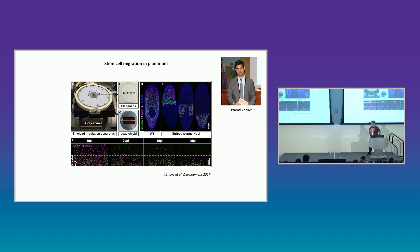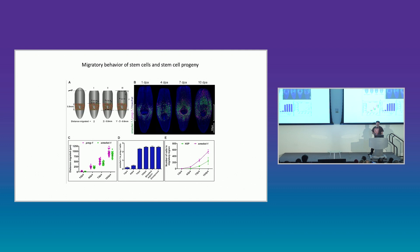So that was Sounak's project, and Prasad's project was slightly different. He was interested in stem cell migration, and he did this by essentially inventing an assay that allows you to leave behind a stripe of stem cells in the animal using collimated x-rays. And then he would make a wound, and then use lots of methods to track migration to the wound.